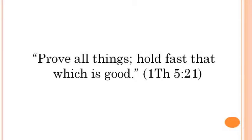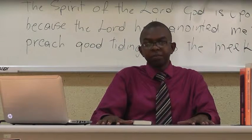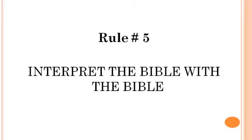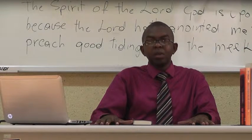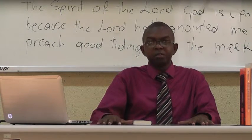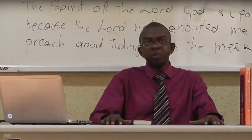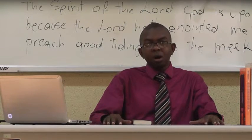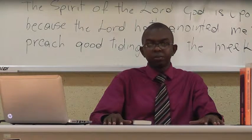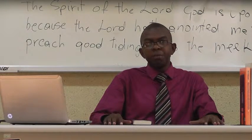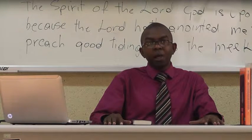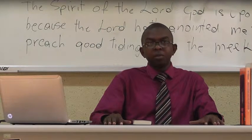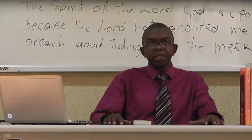First Thessalonians 5:21 says, 'Prove all things, hold fast that which is good.' Rule number five: interpret the Bible with the Bible. The Bible often interprets itself — for example, the parable of the sower in Luke 8:5 is interpreted in the same chapter in Luke 8:11. Not all of the Bible's interpretations are spoon-fed this way, though. The principle of searching comes into play many times to find from the Bible what the Bible means. All the Bible principles and rules must come into play to get to the bottom of seemingly difficult verses.